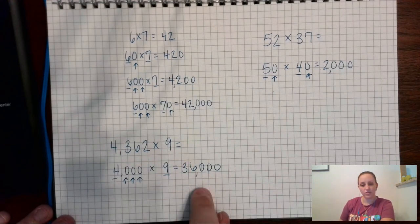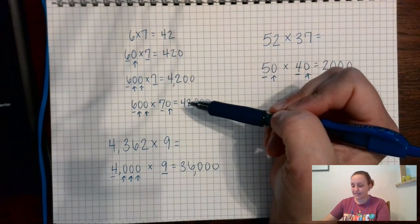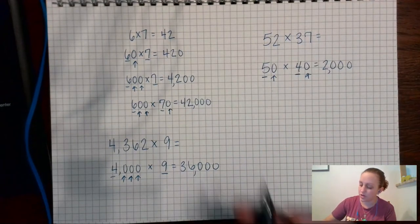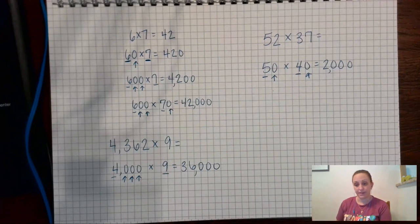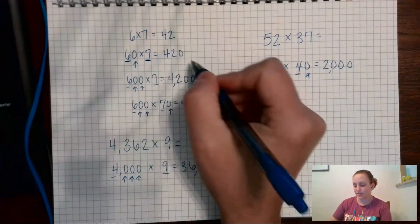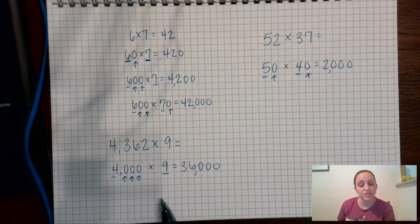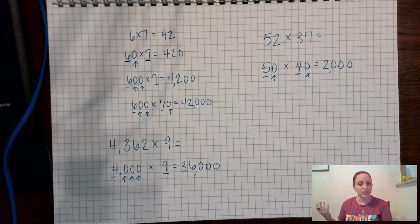So I add one, two, three zeros. So 4362 times 9 is about 36,000. So again really cool trick when we add zeros to the end we can do what's called front-end multiplication where you're taking just the digits that aren't zeros, multiplying them, and then you add the zeros on at the end. And then that also helps us when it comes to estimation.